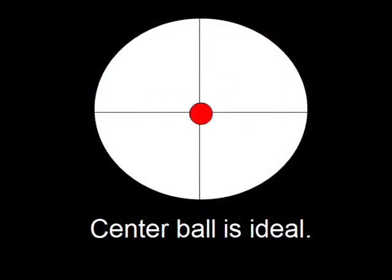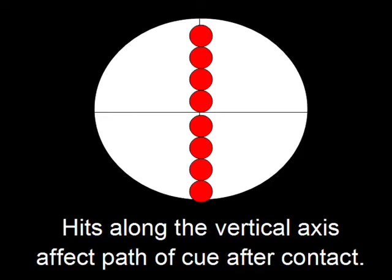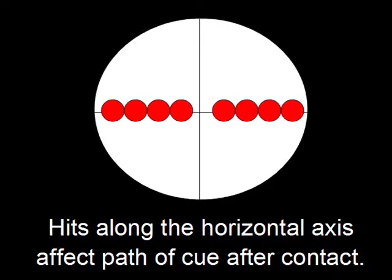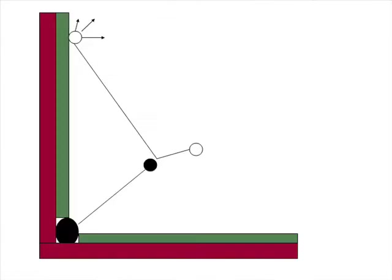When playing position, many professionals prefer to use center cue ball shots as much as possible. If additional cue ball manipulation is needed, patterns that only require hits along the vertical axis are preferred. When using follow only, the cue ball diverges off of the tangent line as shown in this diagram. Shots to the right or left of the vertical axis, which is often referred to as English, affect the path of the cue ball after it makes contact with the cushion, as shown in this diagram.